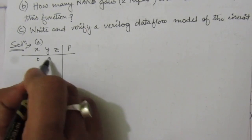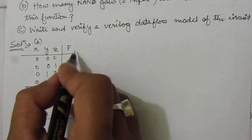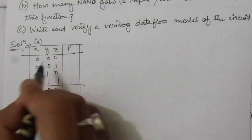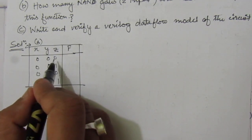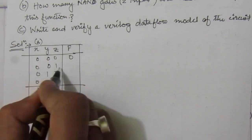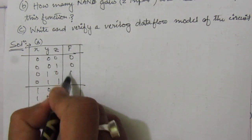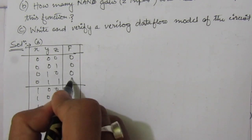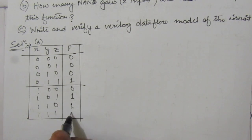For 3 inputs, we will have 8 combinations. As per the majority function definition, we check the number of 1s for each input combination. For 0,0,0 we have 3 zeros and no ones, so F=0. For single 1 and two 0s, F=0. For 2 ones and 1 zero, the number of 1s is greater than the number of 0s, so F=1. For all three inputs 1,1,1, F=1.